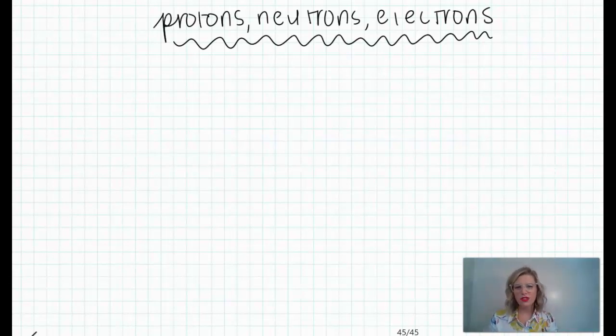It's not mandatory to watch, but if you are interested in the discovery of the neutron, you can go ahead and watch that video. But for today, we're going to talk a little bit about how to determine the number of protons, neutrons and electrons using the element symbols from the periodic table.